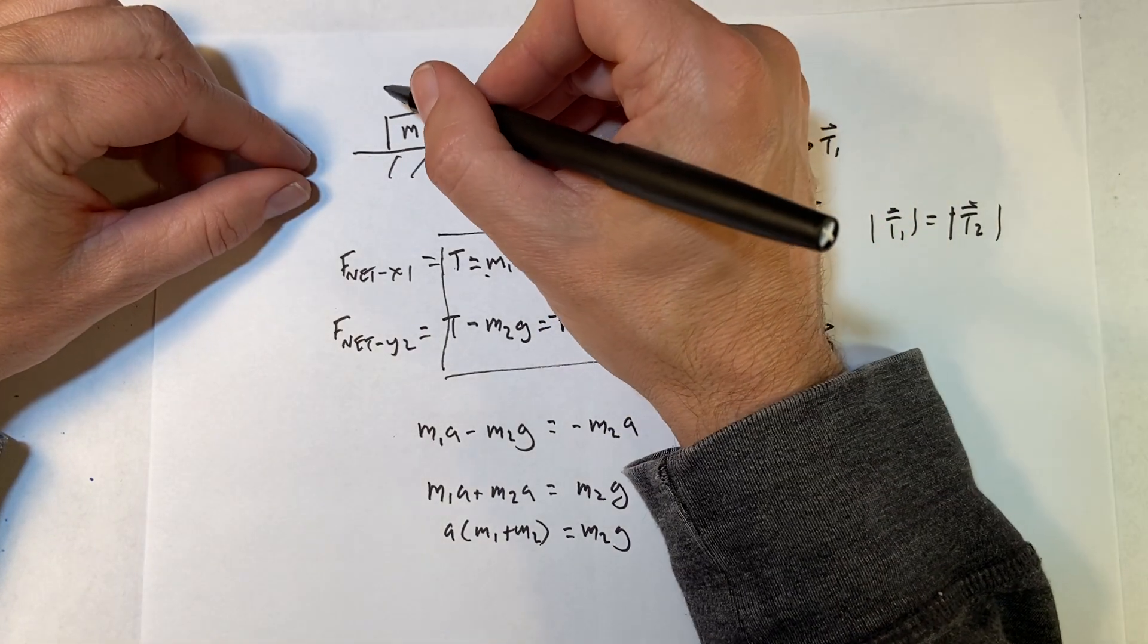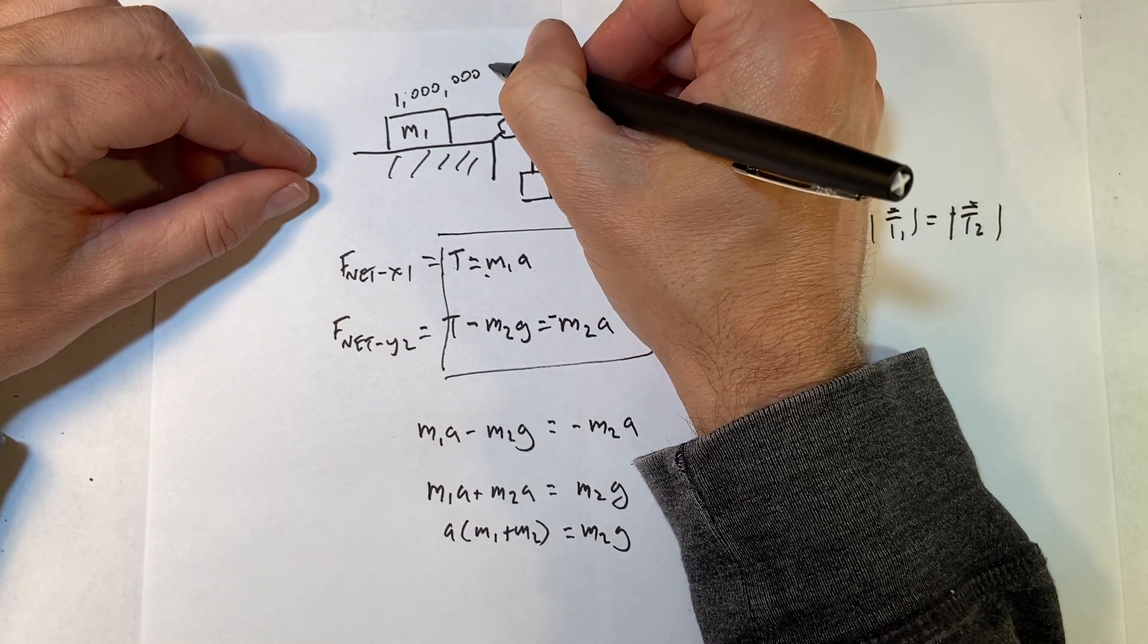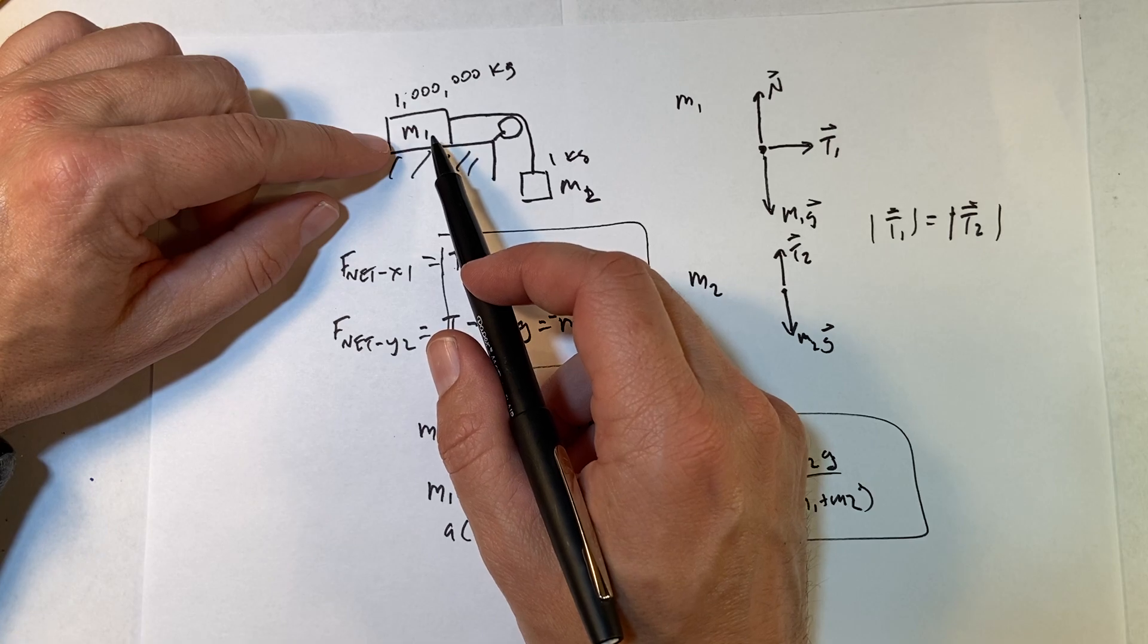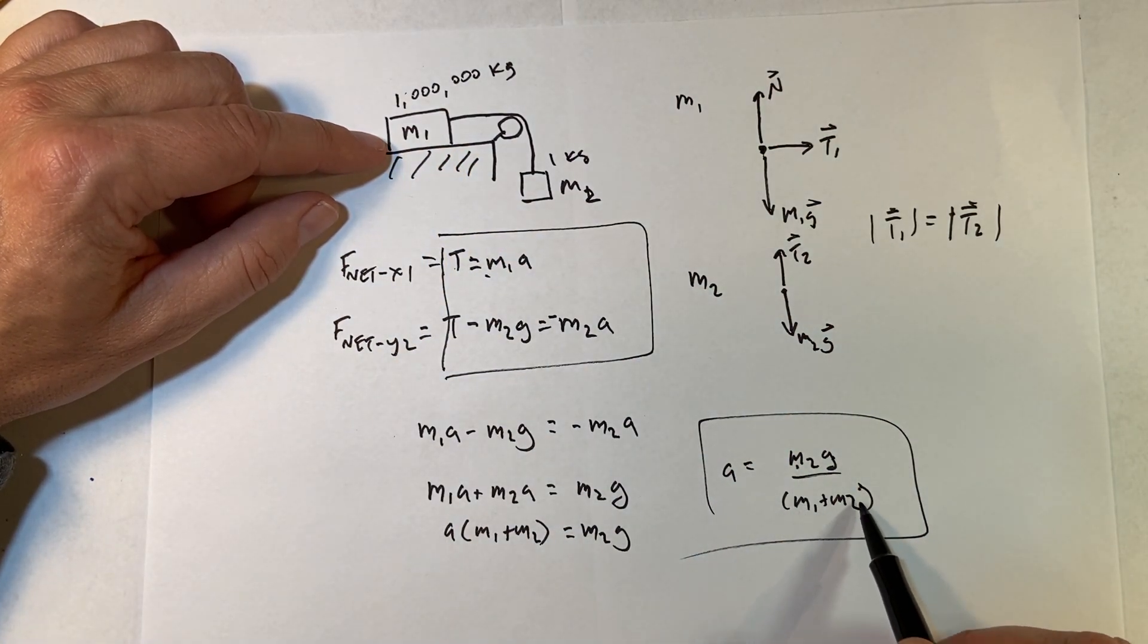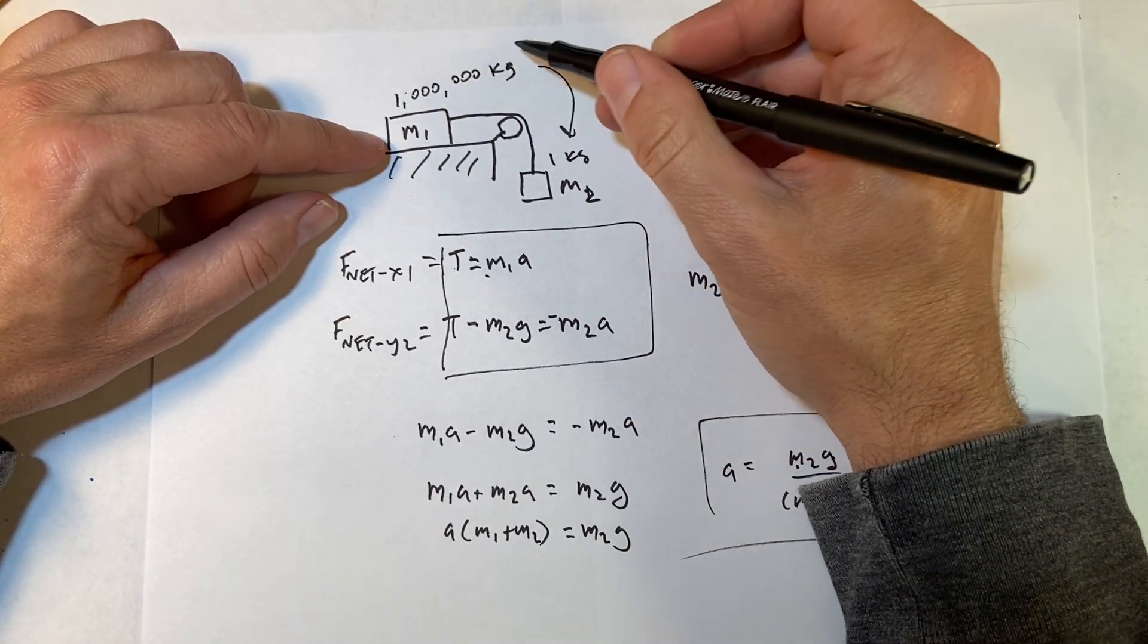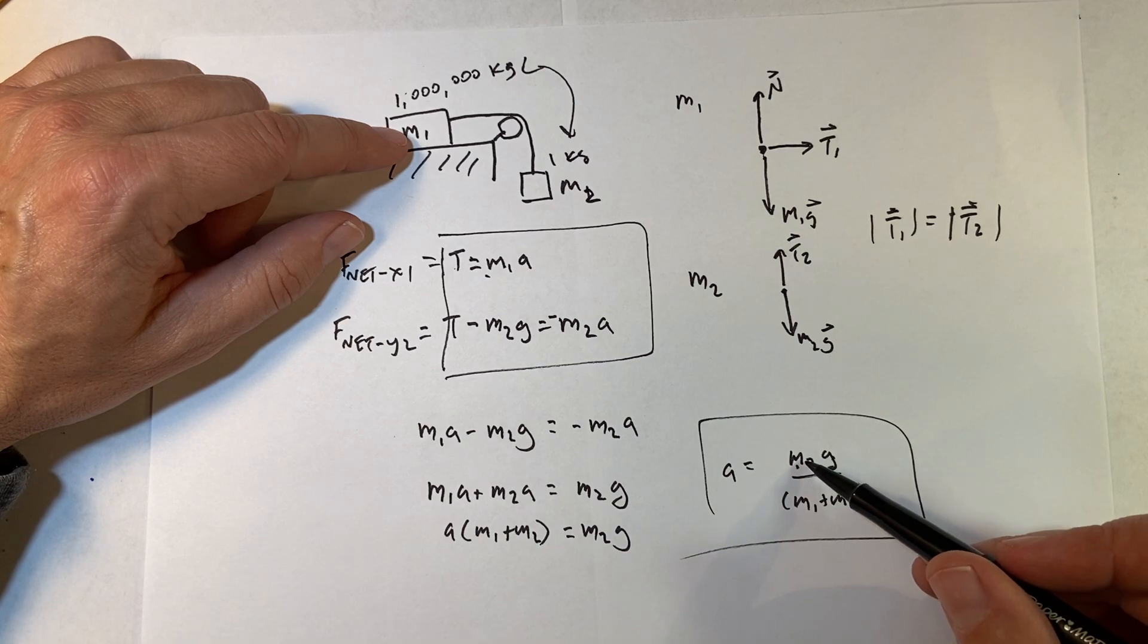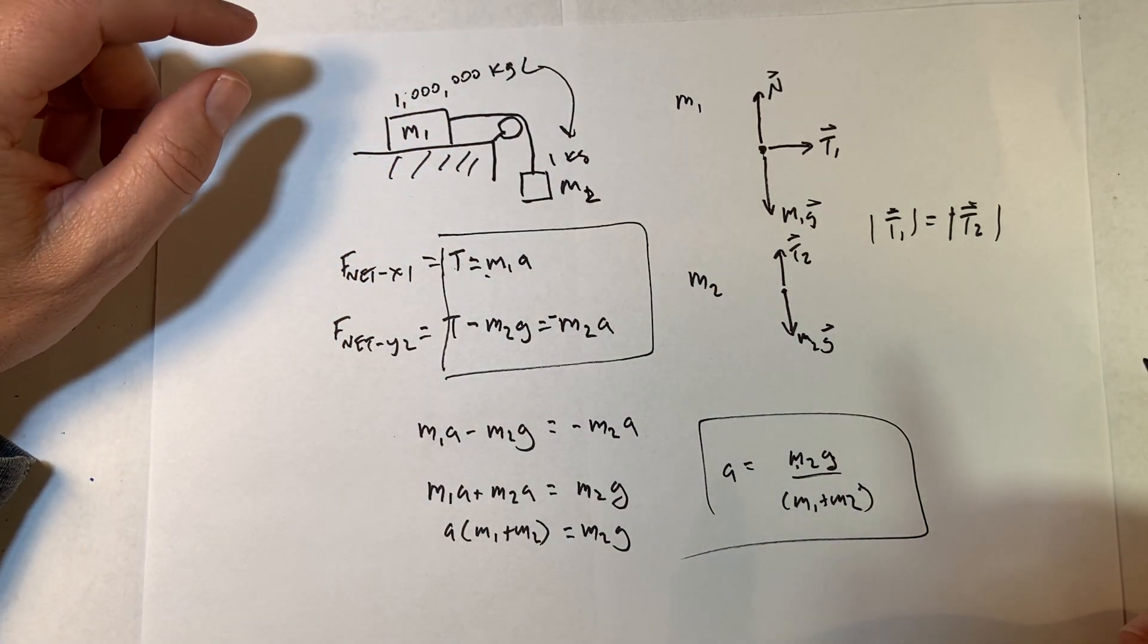What if this is 1,000, 1,000,000 kilograms, and this is 1 kilogram? Then it should be super tiny acceleration. So if m2 is 1,000,000 and 1, yeah, it's pretty small. What if I switch these? Then it should accelerate at g, because this one kilogram mass is not really going to do much up there. So if m2 is a million divided by a million and 1, yeah, that works. So everything looks like it's working.